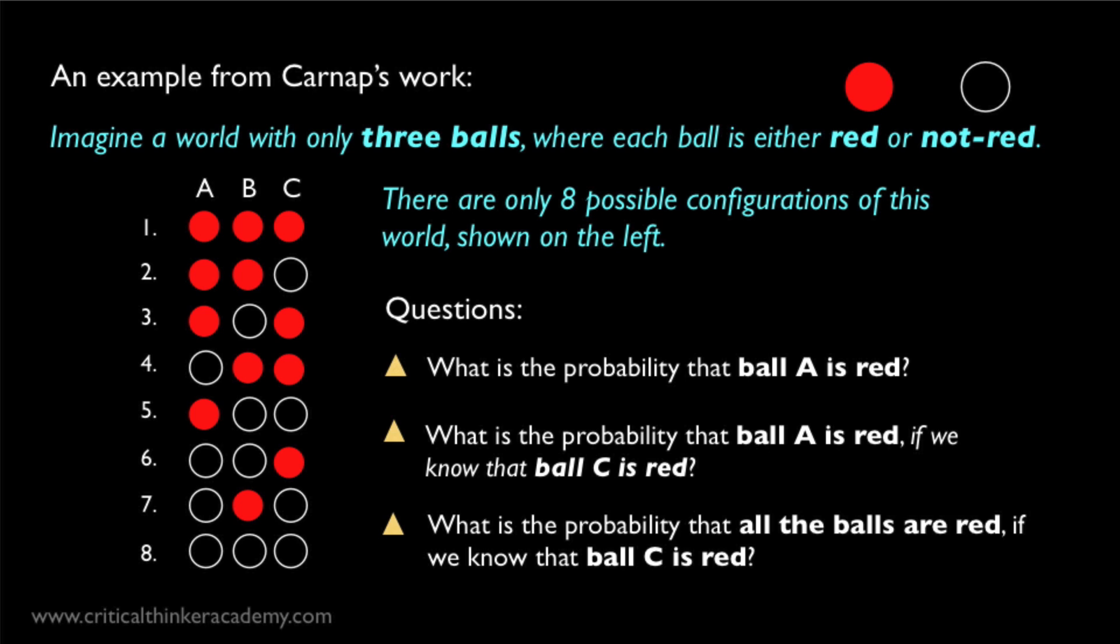So in this example, if you have evidence that ball C is red, then this will change your estimation of likelihood that, say, ball A is red, or that all the balls are red. Now Carnap was trying to generalize this procedure in a way that would give a general definition of logical confirmation in the form of a confirmation function that would apply to all cases where evidence has a logical relationship to a hypothesis. But Carnap himself realized that there's more than one way to define the confirmation function in his system, and logic alone can't tell us which of these to choose.